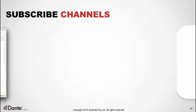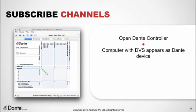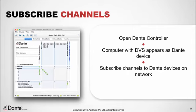To subscribe channels, open Dante Controller — this can be on the same or a different computer on the same Dante network. With Dante Virtual Sound Card turned on, your computer appears in Dante Controller like any other Dante device. The name of the Dante device defaults to your computer's name and can be changed in Dante Controller. The computer displays the number of transmitter and receiver channels configured in DVS, and you subscribe to these channels just like any other Dante device.